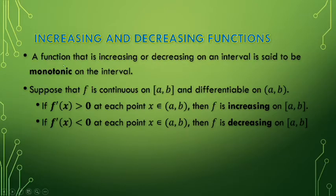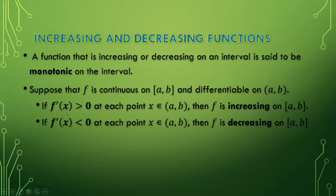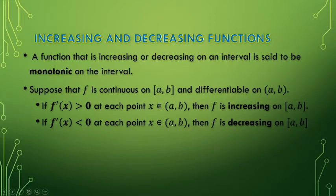Moving to increasing and decreasing functions: a function that is increasing or decreasing on an interval is said to be monotonic — either increasing (going up) or decreasing (going down). Suppose that f is continuous on the closed interval [a, b] and differentiable on the open interval (a, b). If f'(x) is greater than 0 at each point x on the open interval, then f is increasing on [a, b]. And if the slope f'(x) is less than 0, then the function f is decreasing on all points of the interval.